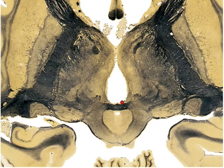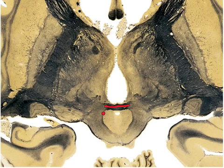We have the posterior commissure right here, which is actually a bundle of white fibers connecting the two hemispheres. Don't let this stain confuse you — these are actually white fibers, and it's important in the bilateral pupillary light reflex.